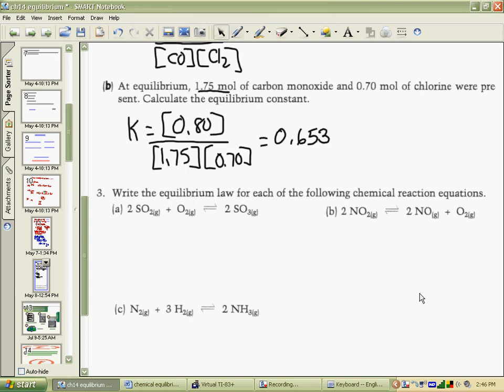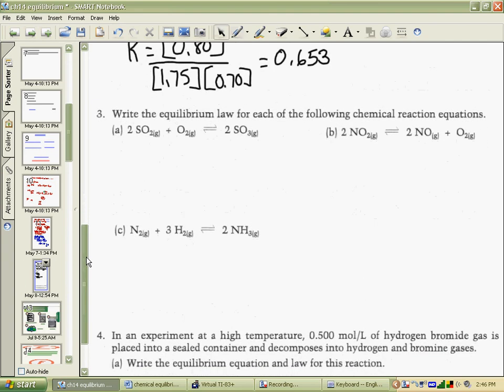So number three, write the equilibrium law for each of these. Again, a similar expression to what we wrote before. The products, SO3, because there's a 2 here, it means that there are two of them multiplied together, so we have them squared. SO2 is one of the reactants, and again there are two of them, so it is squared, and oxygen.